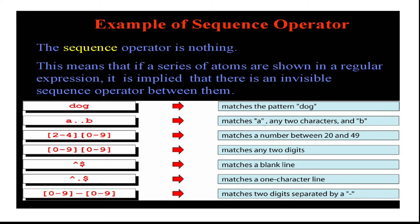A sequence operator is nothing — meaning that if a sequence of atoms are shown in a regular expression, it is implied that there is an invisible sequence operator between them. For example, the expression 'dog' matches the pattern dog in a given string. So dog should be a part of that string, and all three characters in the expression will be matched with the three characters in the given string.